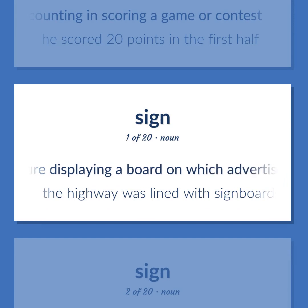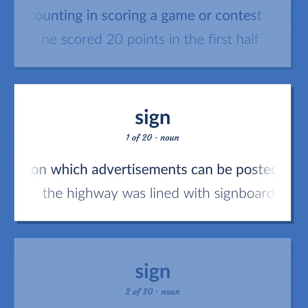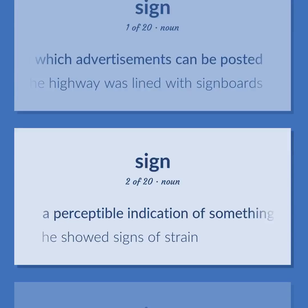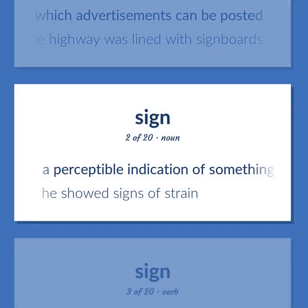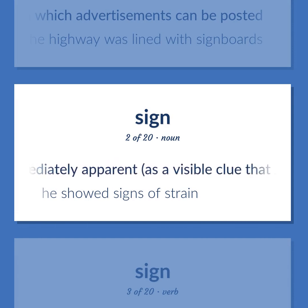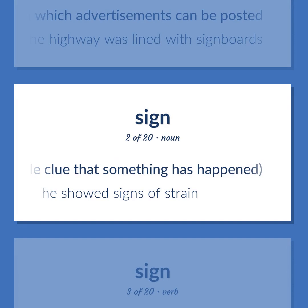Signboard: A structure displaying a board on which advertisements can be posted. Example: The highway was lined with signboards. Sign: A perceptible indication of something not immediately apparent, as a visible clue that something has happened. Example: He showed signs of strain.